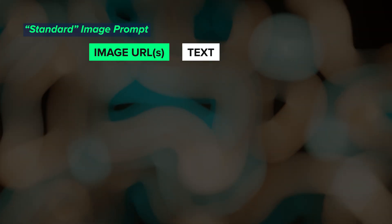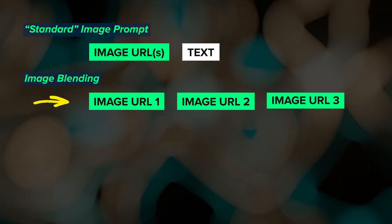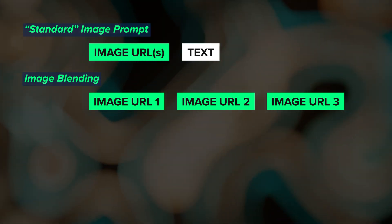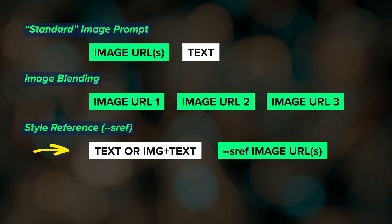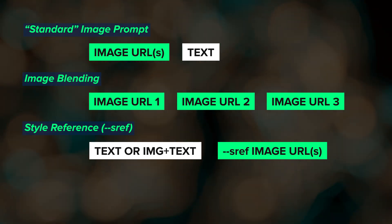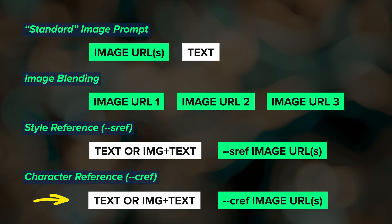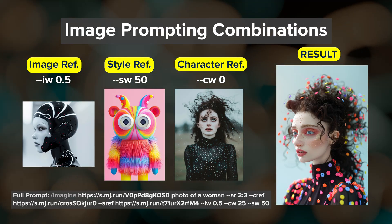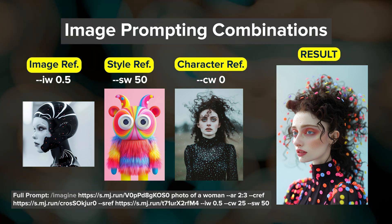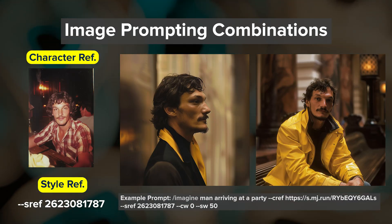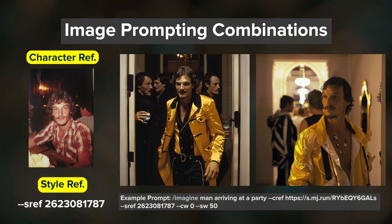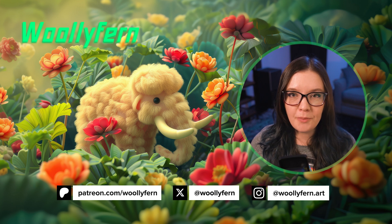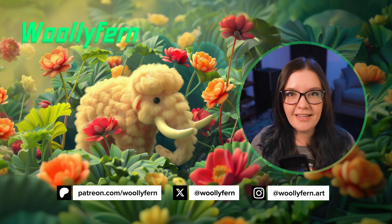Alright, let's do a quick review. We have the standard image prompt where you can use one or more images with a text prompt; blending for when you want to blend two or more images without a text prompt; style reference to transfer the visual aesthetics of a reference image to your results; and character reference to place a similar character into multiple scenes. Combining these approaches can be really powerful and give you a lot of creative control. I really love combining style reference and character reference together for storytelling and creating cohesive scenes. If you enjoyed this video or learned something new, please consider giving it a like and subscribing for more content like this. Thanks for watching and I'll catch you in the next one.